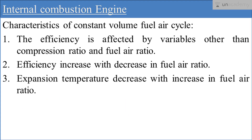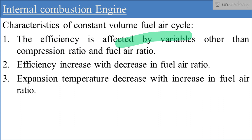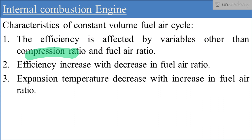Now let's discuss the different characteristics of the constant volume fuel air cycle. The first characteristic is that efficiency is not only dependent on compression ratio and fuel air ratio, but also on different variables which affect efficiency. These variables include pressure, temperature, maximum pressure, maximum temperature, mean effective pressure, etc. So the efficiency is affected by all these variables as well as the compression ratio and fuel air ratio.